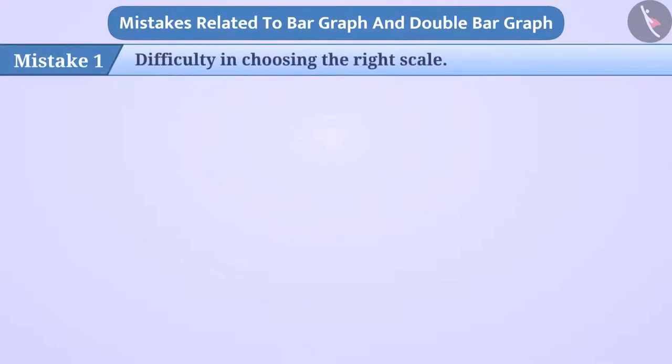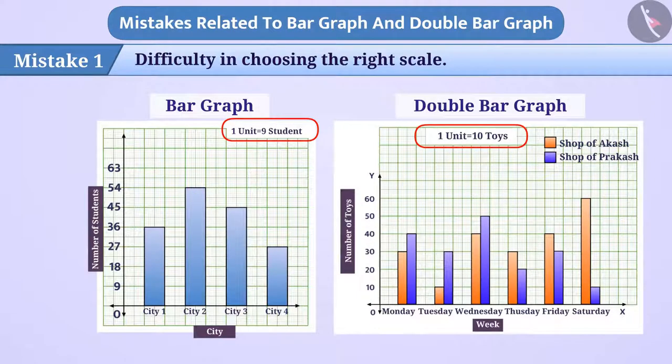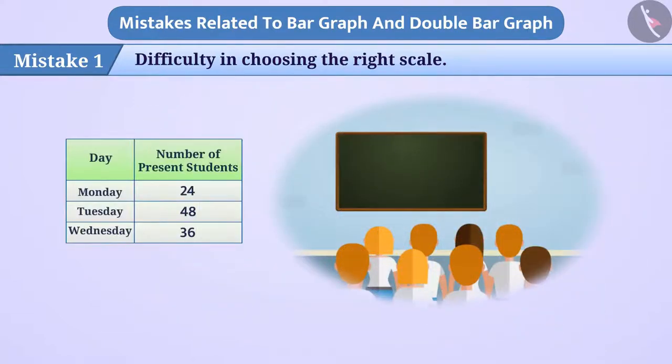Mistake 1: students often have difficulty in choosing the right scale when drawing a bar graph or a double bar graph. Here the number of students present in the class on Monday, Tuesday and Wednesday are shown.